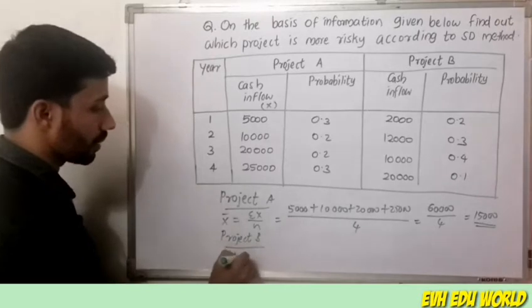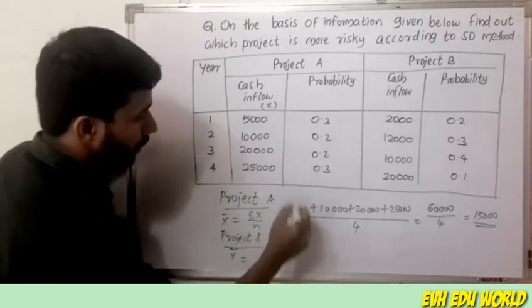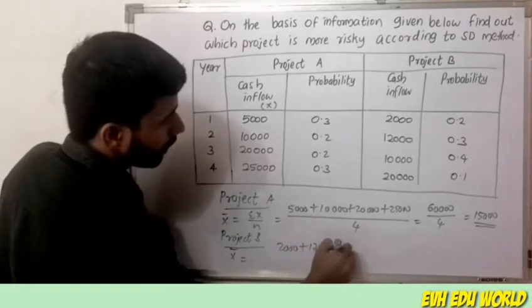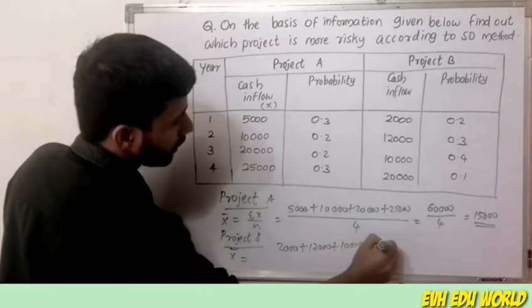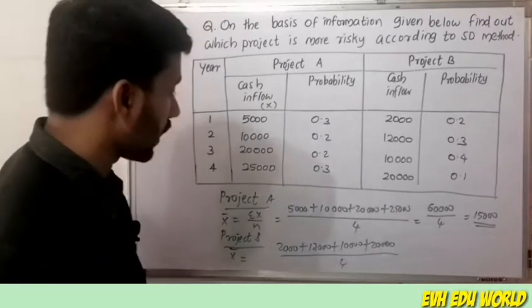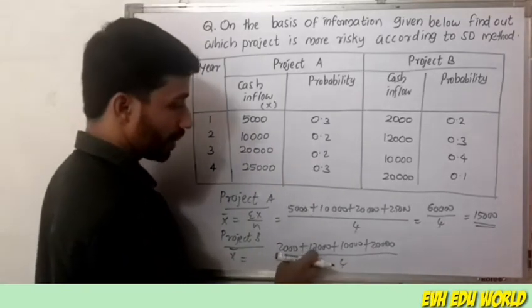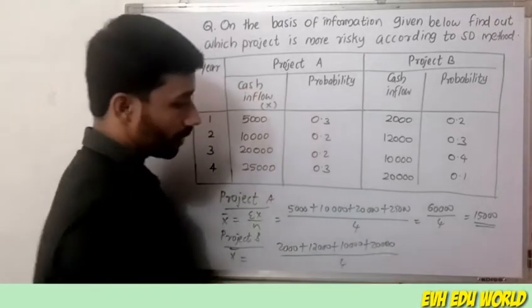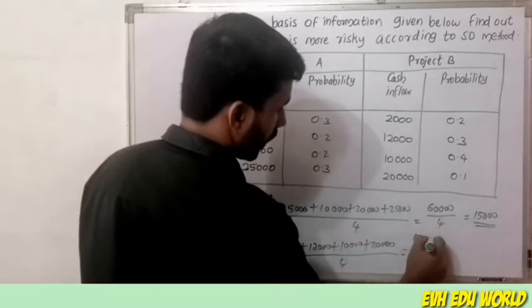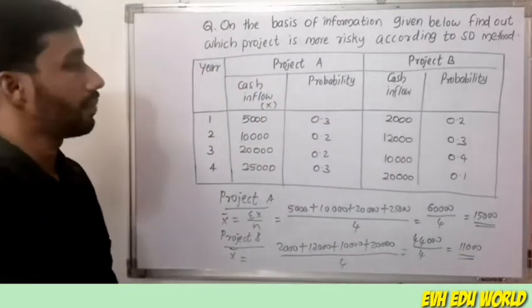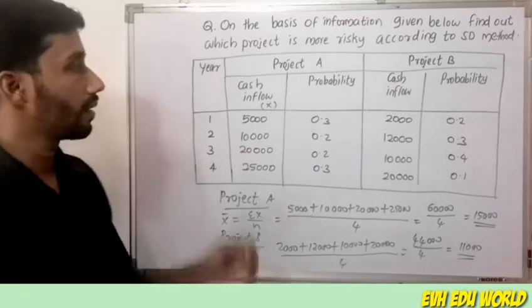For Project B, x̄ = (2,000 + 12,000 + 10,000 + 20,000) divided by 4 = 44,000 divided by 4 = 11,000.